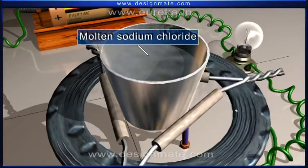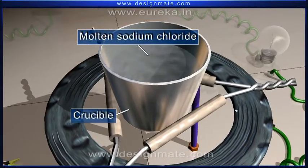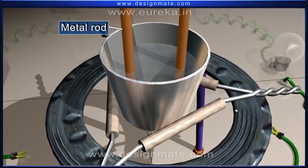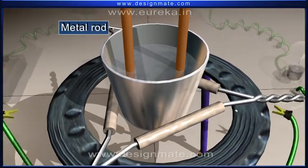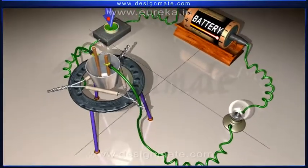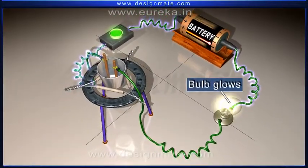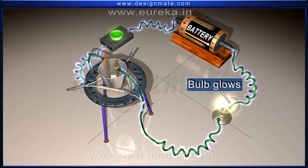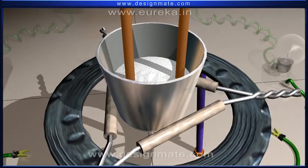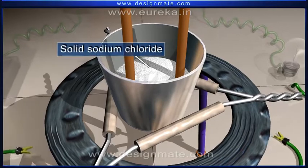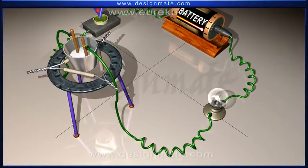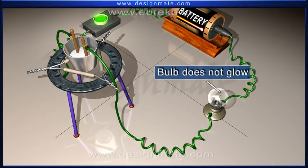Take some molten sodium chloride in a crucible. Introduce two metal rods and connect the circuit as shown. We observe that the bulb glows, indicating the flow of current. Now repeat the activity using solid sodium chloride. The bulb in the circuit does not glow.